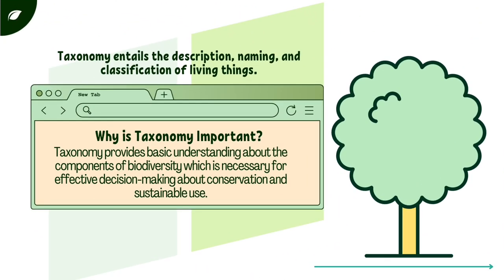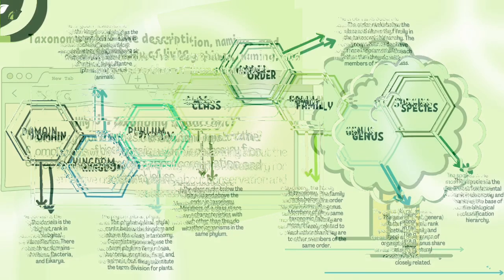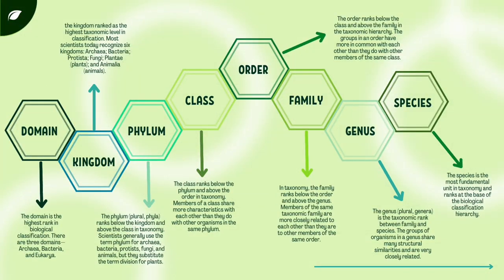Moving forward — what is taxonomy and why is it important? Taxonomy entails the description, naming, and classification of living things. Taxonomy is crucial because it provides a basic understanding about the components of biodiversity, which is necessary for effective decision-making about conservation and sustainable use. The classification system commonly used today is based on the Linnaean system and its 8 levels of taxa.